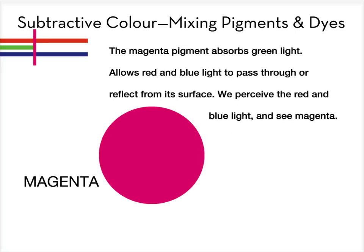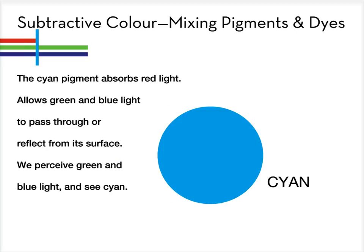The magenta pigment absorbs green light, allows red and blue light to pass through or reflect from its surface. We perceive the red and blue light and see magenta. The cyan pigment absorbs red light — we perceive green and blue light and see cyan.